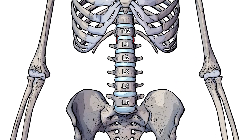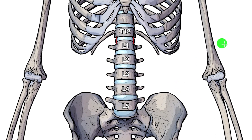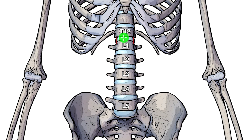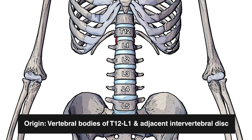So let's take a look at the origin next. You can see I've got that highlighted here in red either side of the vertebrae, and I've also labelled the vertebrae — the L's would be the lumbar and the T would be the thoracic vertebrae. This red area spans onto the vertebral body of T12, onto the vertebral body of L1, and it's also crossing onto the adjacent intervertebral disc as well. So that origin point is going to be on the vertebral bodies of T12, L1, and the adjacent intervertebral disc.